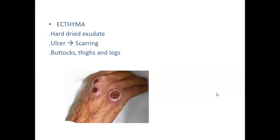Then ecthyma — hard, dried exudate — usually caused by pseudomonas. Ulcer occurs and leads to scarring. The dorsum, thighs, buttocks, and legs are the most common sites.